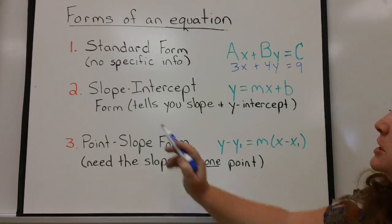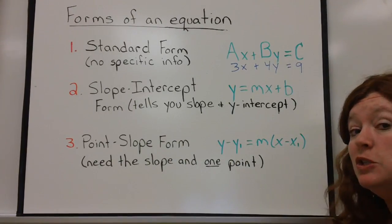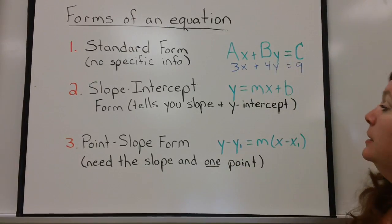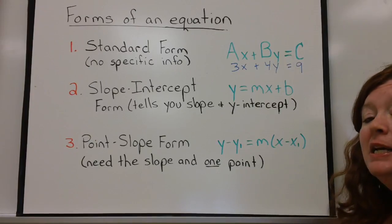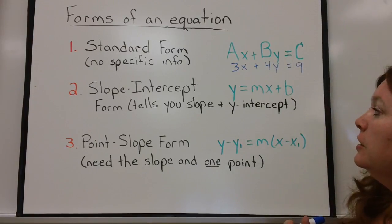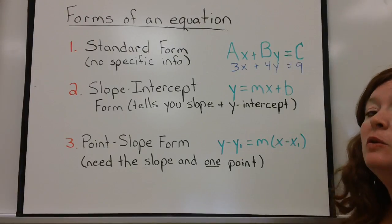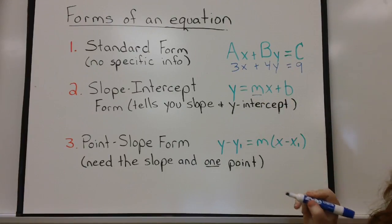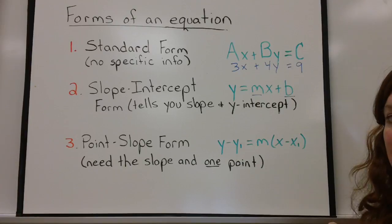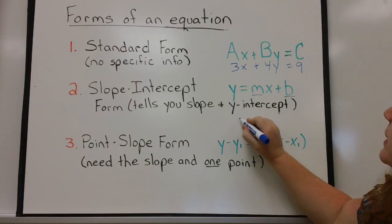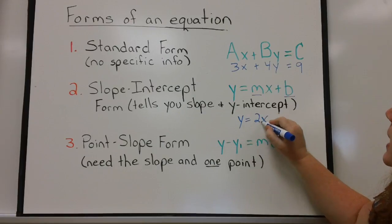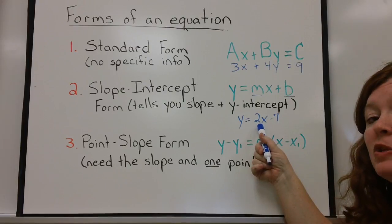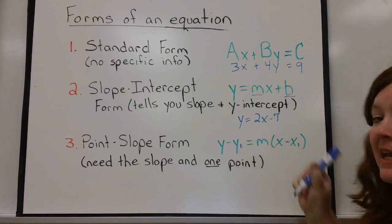The second form of an equation is called slope-intercept form. That tells you some very important information — it tells you the slope of the line and it tells you the y-intercept. The y-intercept is where, if you graph this line, the line would hit or intercept the y-axis. m is your slope and b is your y-intercept. So if you see an equation like y equals 2x minus 7, you know the slope is 2 and it intercepts the y-axis at negative 7.